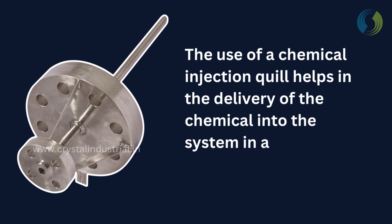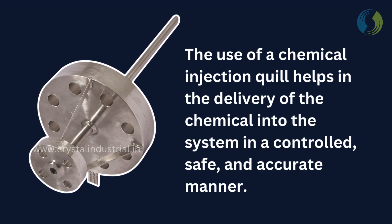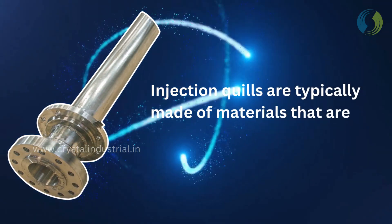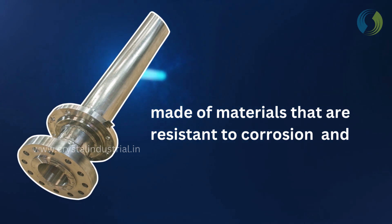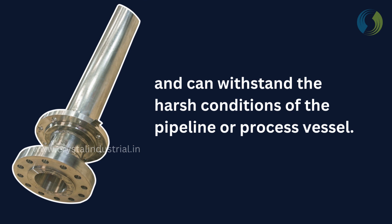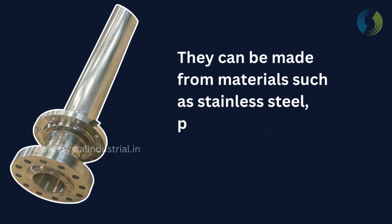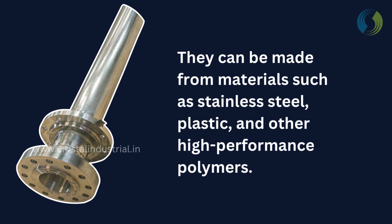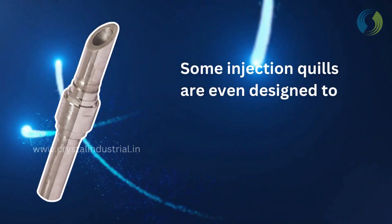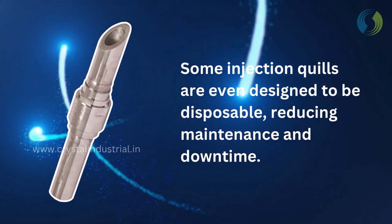The use of a chemical injection quill helps in the delivery of the chemical into the system in a controlled, safe, and accurate manner. Injection quills are typically made of materials that are resistant to corrosion and can withstand the harsh conditions of the pipeline or process vessel. They can be made from materials such as stainless steel, plastic, and other high-performance polymers. Some injection quills are even designed to be disposable, reducing maintenance and downtime.